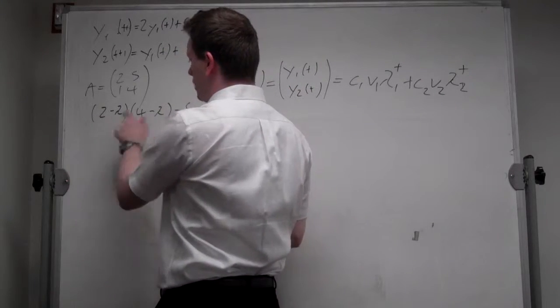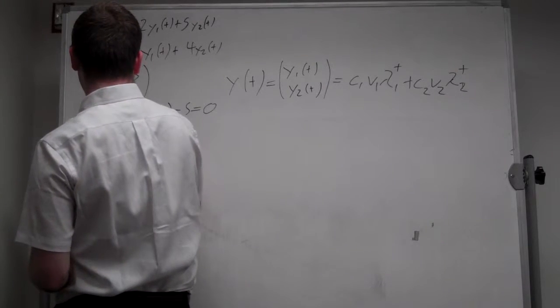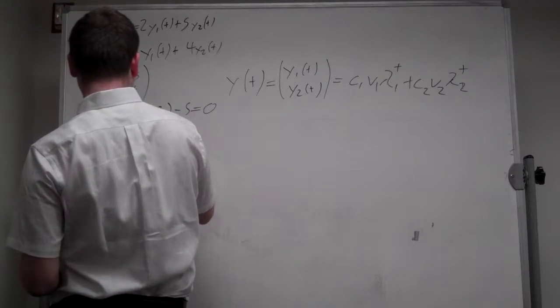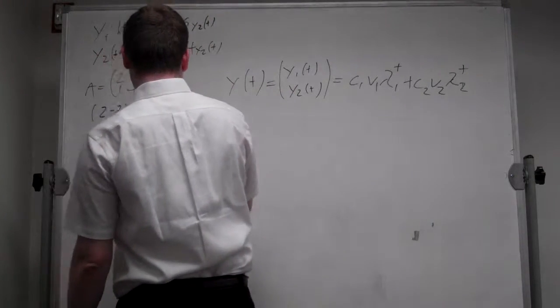Now we can multiply it out. So we get lambda squared minus 6 lambda, 2 times 4 is 8, minus 5 is 3, plus 3 equals 0.